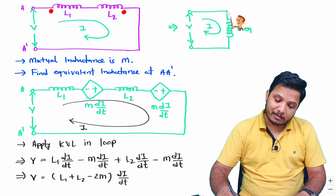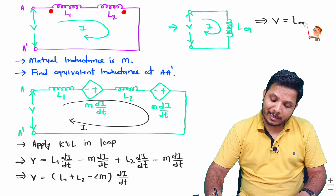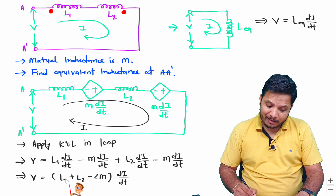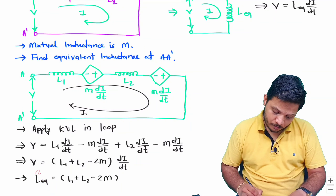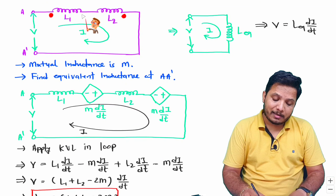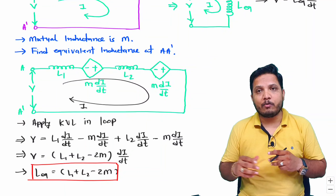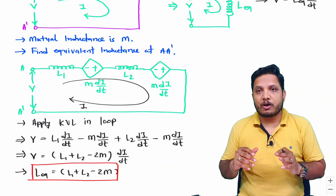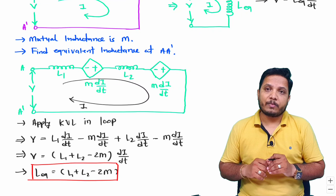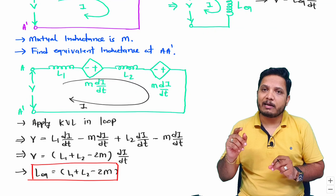Since the equivalent circuit gives V = L_equivalent·(di/dt), comparing both equations gives L_equivalent = L1 + L2 - 2M. This is how we identify equivalent inductance based on dot convention. Note that if the polarity is leaving-entering, the answer will be the same. I hope it is now clear how to identify equivalent inductance and induced EMF based on dot convention. I'll solve a few more examples — stay tuned with this playlist.